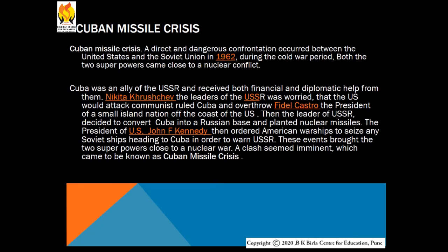Cuba is a small country and was an ally of the USSR, receiving financial and diplomatic help from them. Nikita Khrushchev, the leader of the USSR, was worried that the US would attack communist-ruled Cuba and overthrow Fidel Castro, the president of that island nation off the coast of the US. So the USSR decided to convert Cuba into a Russian base and planted nuclear missiles there. US President John Kennedy then ordered American warships to seize any Soviet ships heading to Cuba, bringing the two superpowers close to nuclear war — which came to be known as the Cuban Missile Crisis.